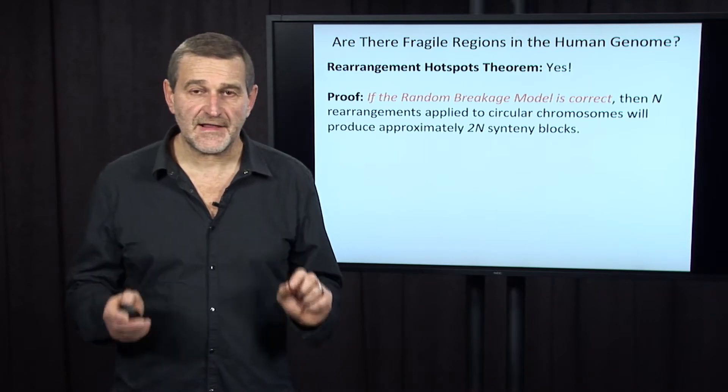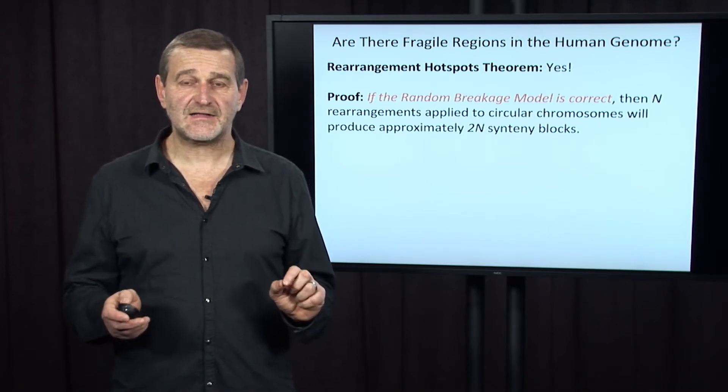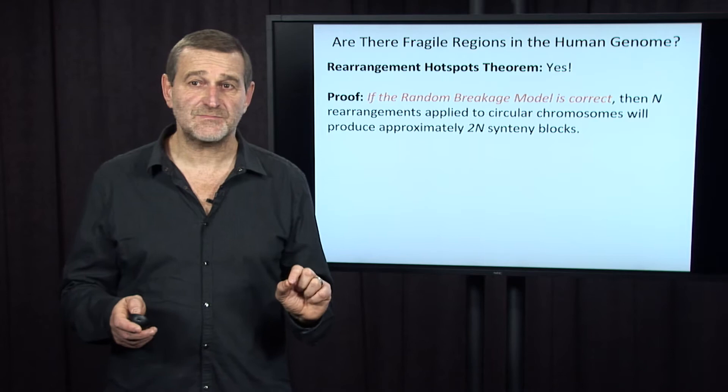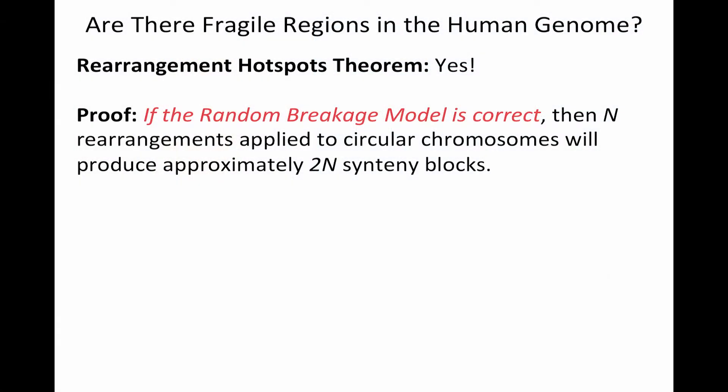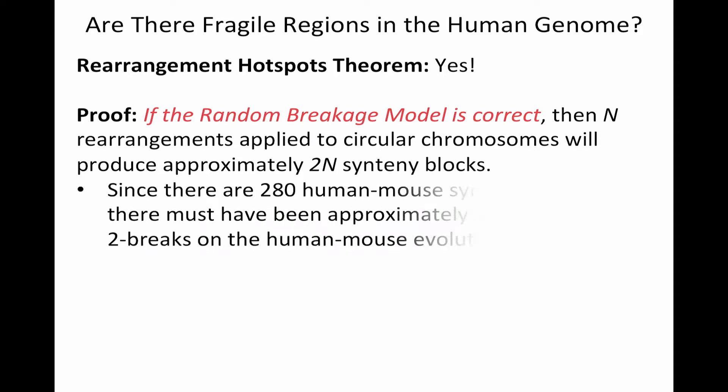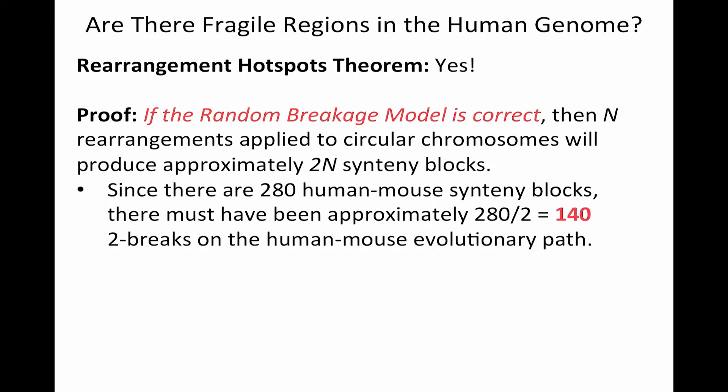If the random breakage model is correct, then N rearrangements applied to a circular chromosome will produce approximately 2N synteny blocks. Therefore, since there are 280 human-mouse synteny blocks, there must have been approximately 280 over 2, which is 140 two-breaks on the human-mouse evolutionary path.